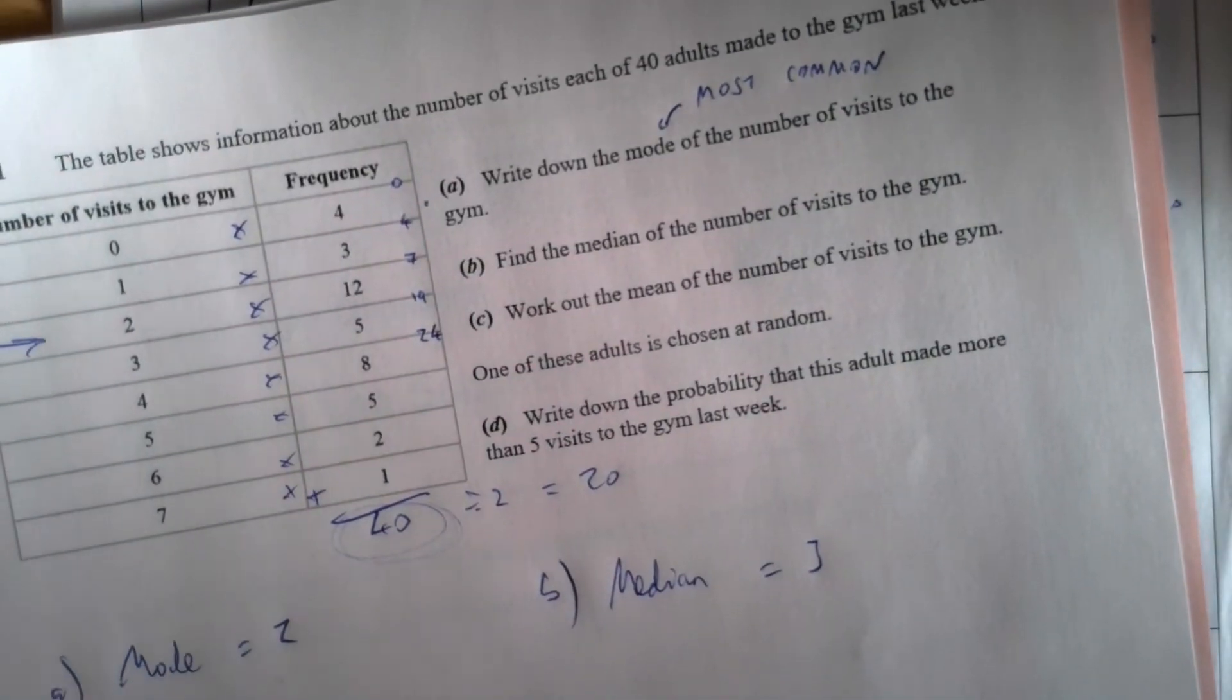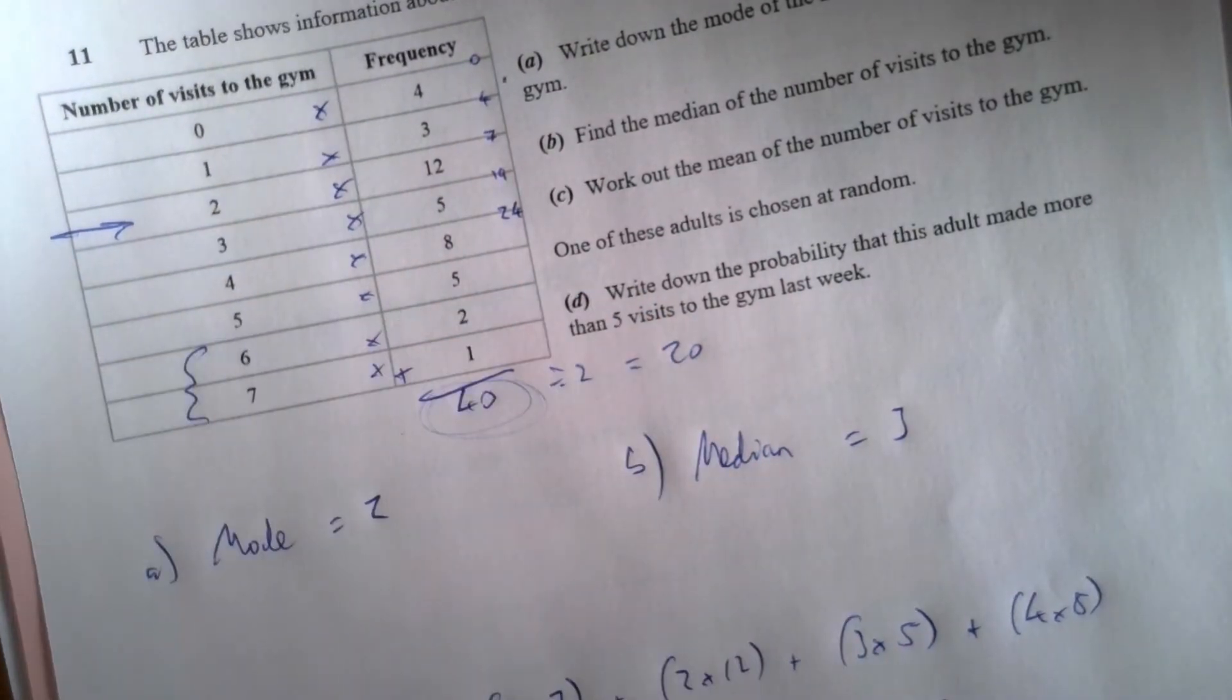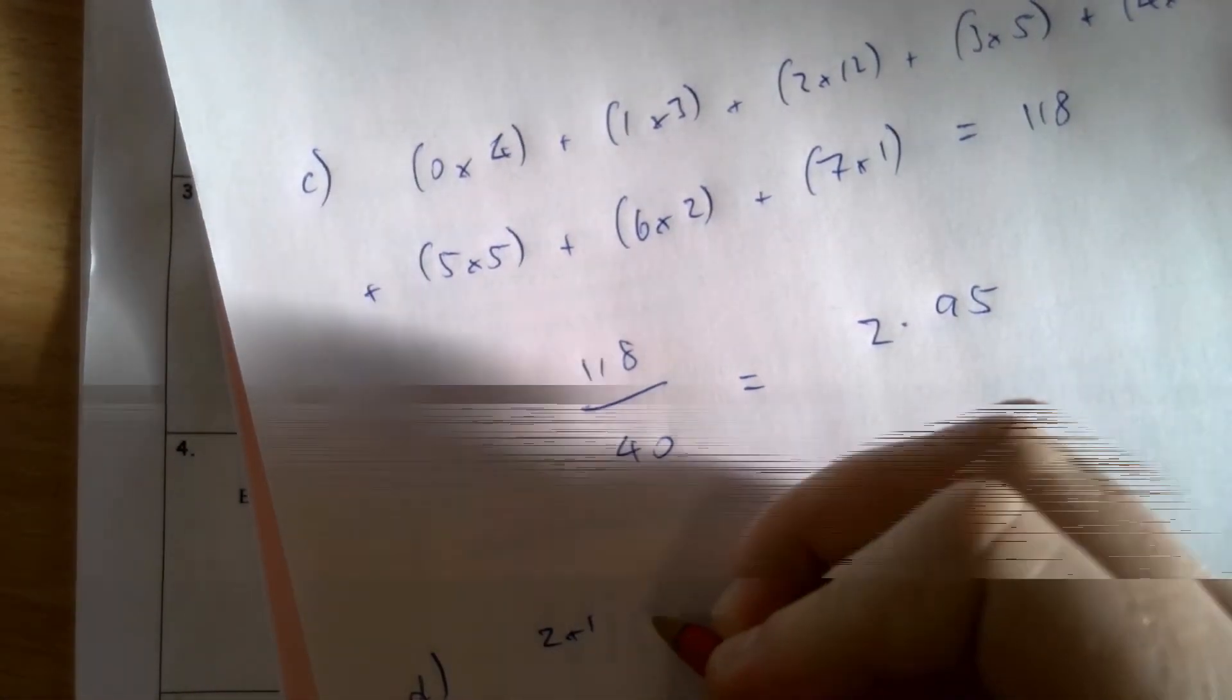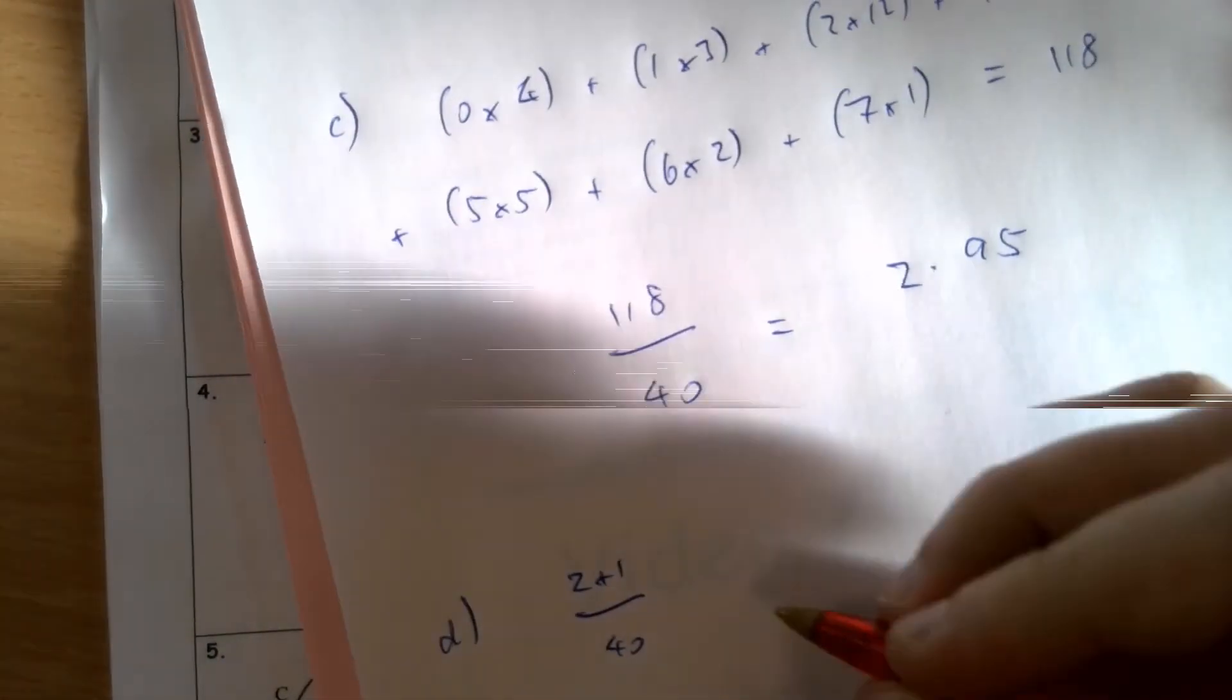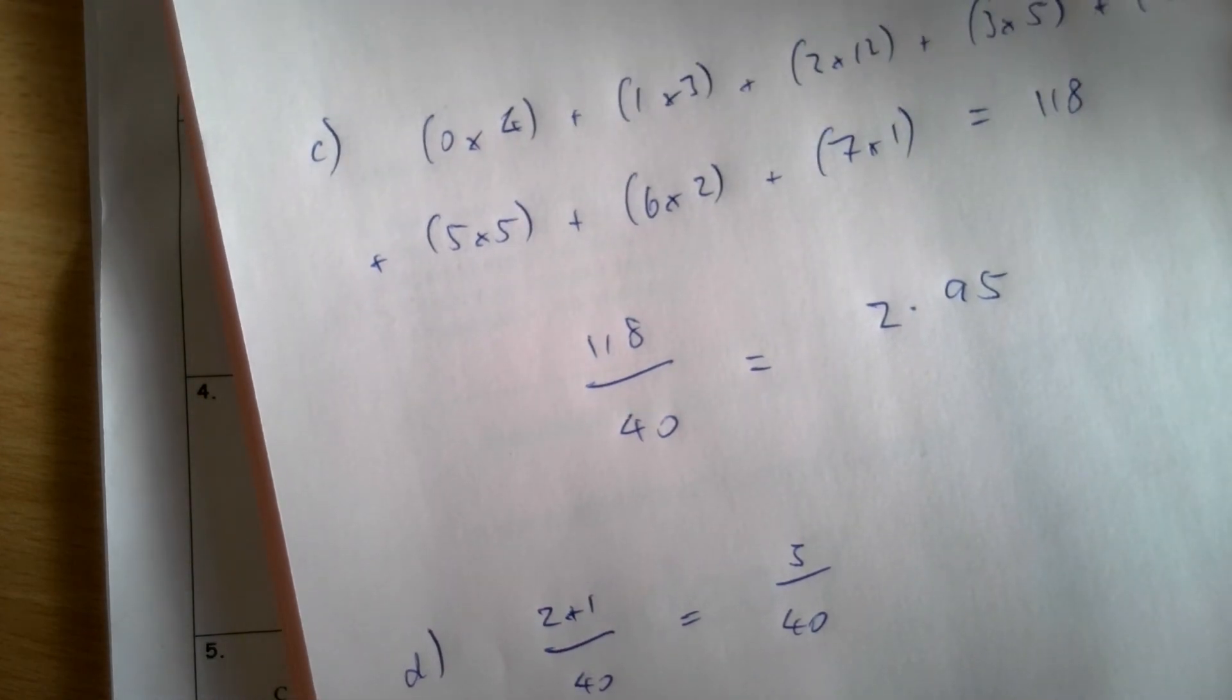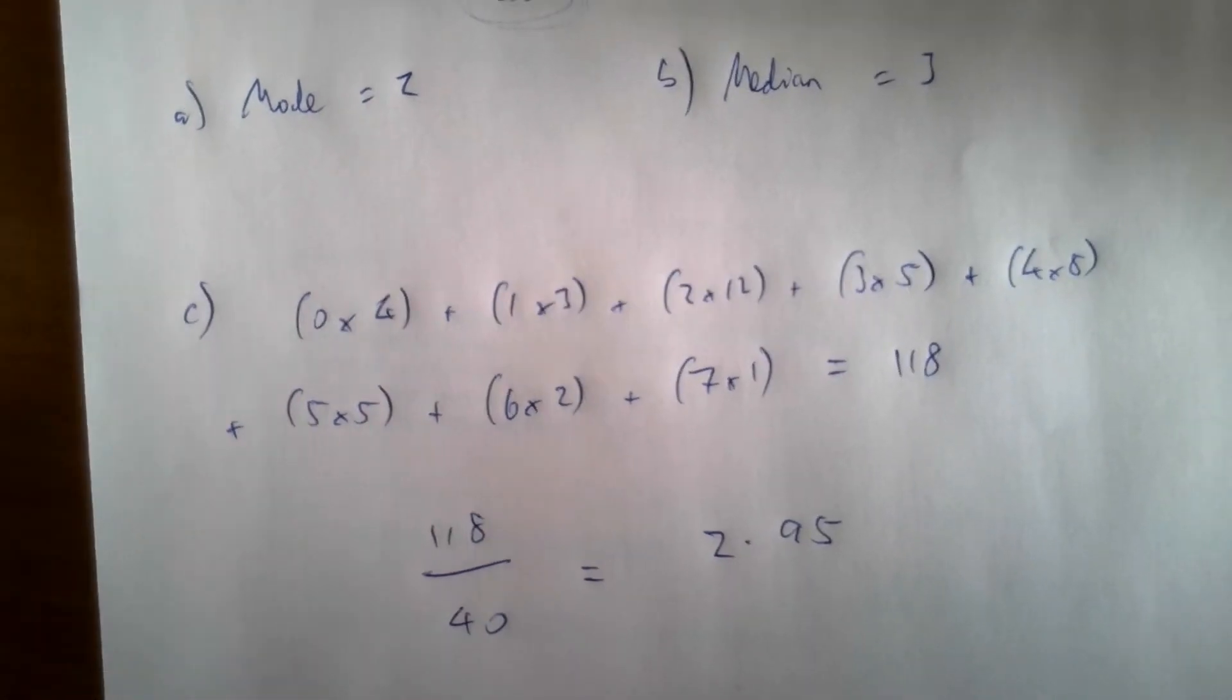And then part D, my last question, write down the probability that this adult made more than five visits to the gym last week. Well, more than five is six or seven, isn't it? So I'm looking at these two frequencies, two and one. So two plus one out of 40, that's three out of 40. That is an acceptable probability. Although if I wanted to express that as a decimal, I could say 0.075.